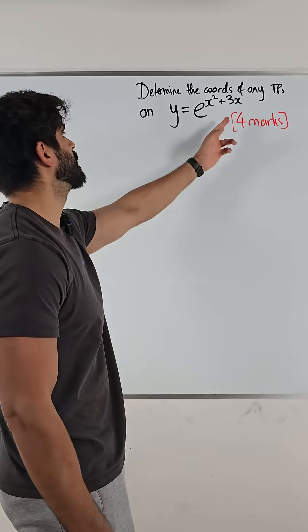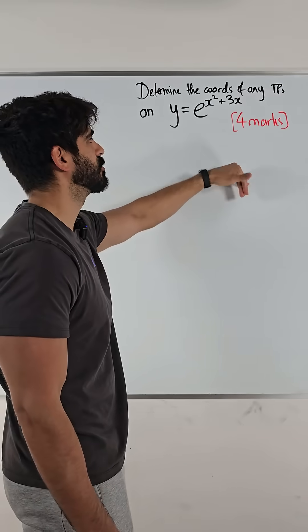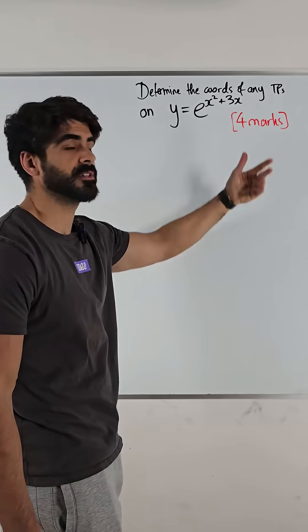Determine the coordinates of any turning points on this curve. Well, turning point means that on a given curve, the gradient of the tangent at that point would be zero. Okay, it's flat.